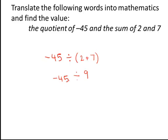Remember that when we have different signs and we divide, our answer is negative. Negative forty-five divided by nine is negative five.